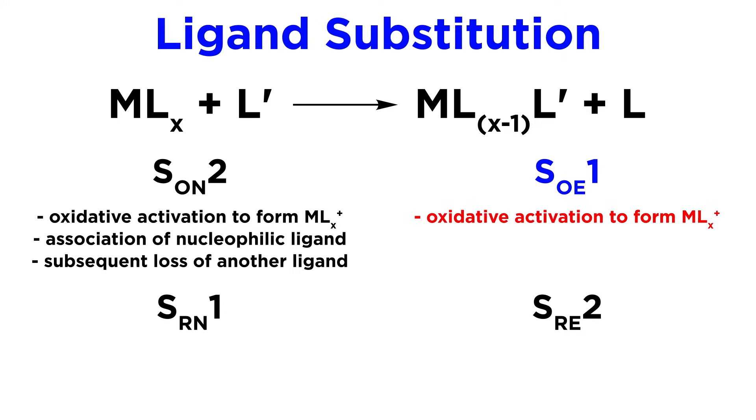SOE1 maintains oxidative activation, but is followed by dissociation of a ligand to form an electron-rich intermediate, and then subsequent coordination of an electrophilic ligand. The 1 is for unimolecular intermediate, like in SN1.